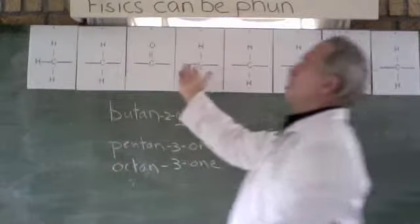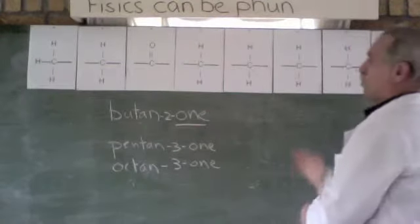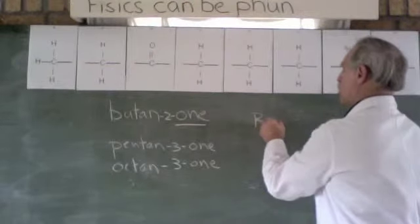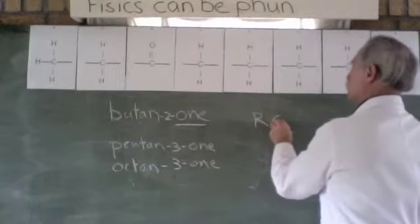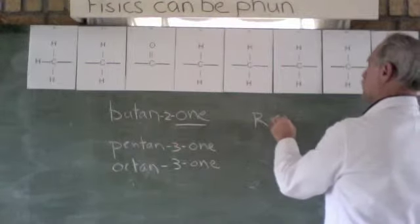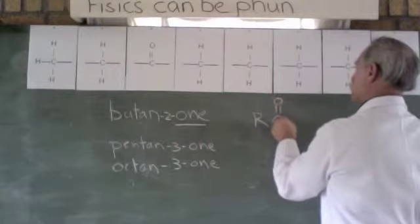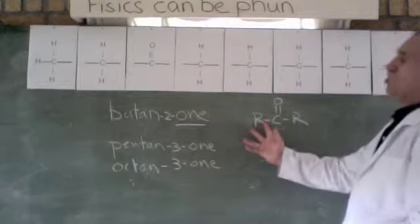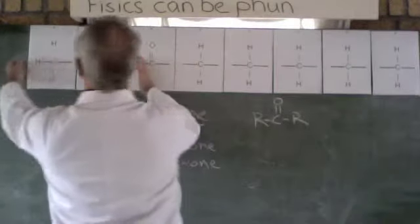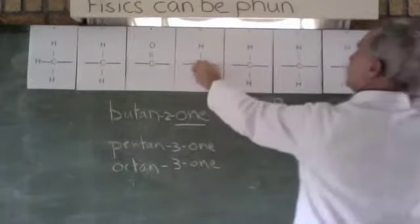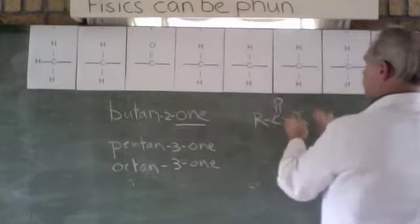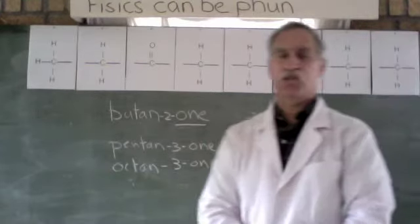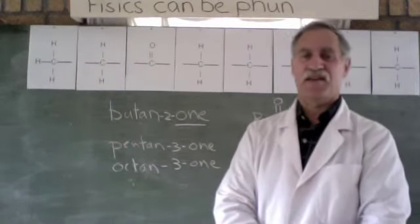We choose the shortest chain. The general formula for ketones is R-C double bond O-R, where R stands for a hydrocarbon chain. So here would be the one R, which would be two carbons long. Here would be one, two, three, four, five—that would be the other R. And here is the carbon with a double bonded oxygen, making it a ketone. Thank you.